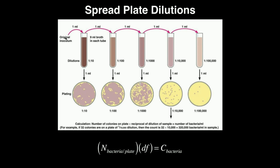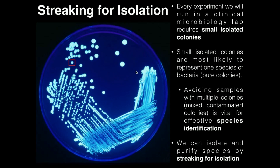Basically, each tube is one-tenth as concentrated as the previous one, going from one-tenth to one-hundredth, one-thousandth, one-ten-thousandth, and one-hundred-thousandth. And you can see that as we plate these, the plates are getting increasingly more dilute until finally you get to the last two, which are actually really good — you can see small isolated colonies there, very similar to what we wanted in the streak plates we covered previously.